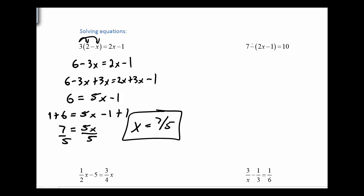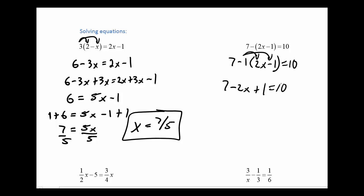In the next example, if you notice, the negative is attached to the parentheses but the 7 is not. We can think of it like there's an imaginary 1 just sitting there. So I'm going to distribute the negative 1 in: negative 1 times 2x is negative 2x, and negative 1 times negative 1 is plus 1. And automatically, I can use the combine like terms on the same side rule.